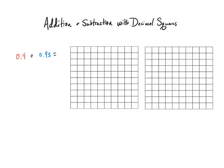Now I'm ready to shade in each of the addends on the decimal squares. For this example, each of these large squares is equal to one whole, so this would be one whole and this would also be another whole — if I were to shade in all of this and all of this I would have two wholes. That also means that these little squares are each equal to one one-hundredth.